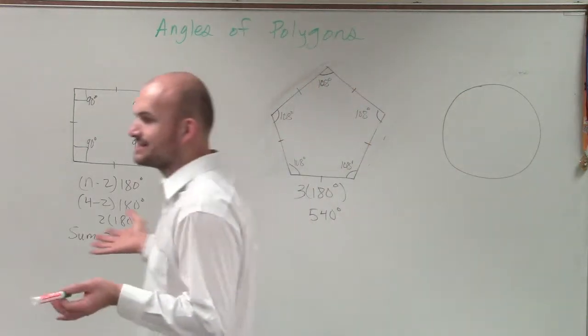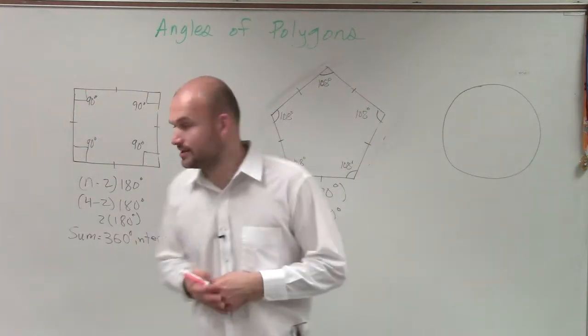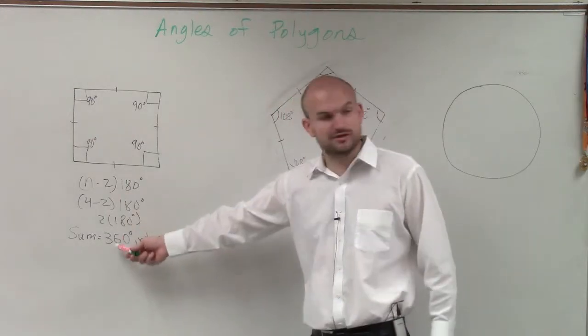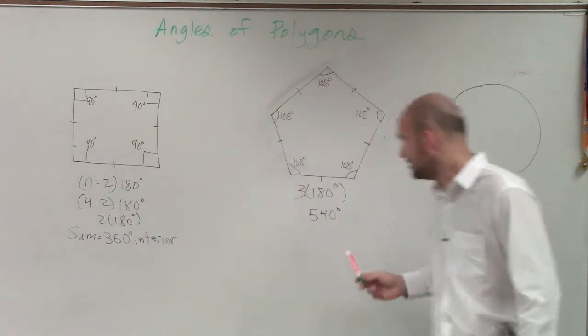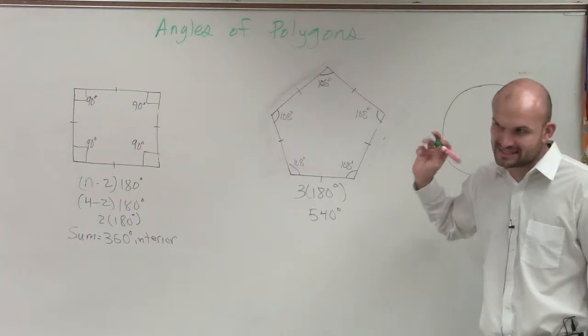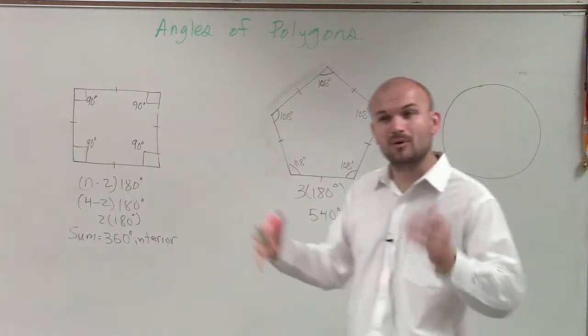So now what we're going to do, ladies and gentlemen, is we talked about what is the sum of the interior angles. And we are able to figure out the sum of the interior angles is 360 for a quadrilateral, and it's 540 degrees for a pentagon. That's the sum of the interior. But what about the exterior?